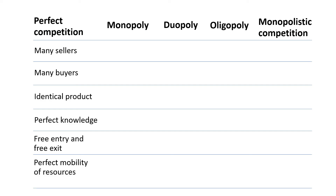For the product, the word identical means exactly the same — not just similar, but exactly the same for all dimensions of the product. If the color is different or the size is different, they are not identical. They may look similar, but not identical. All the products must be exactly the same.